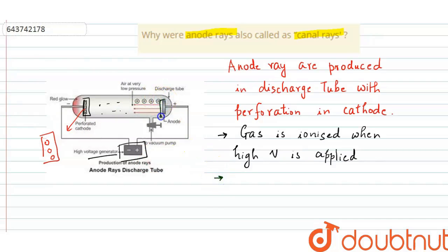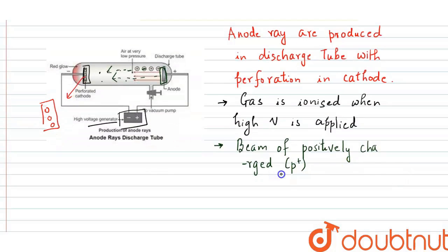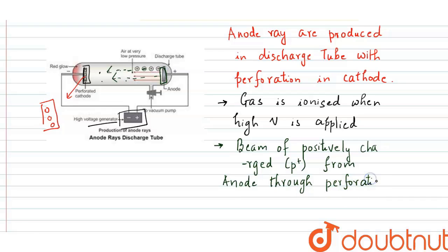The beam of positively charged particles — basically the protons — traveling from the anode to the cathode, through the perforations or holes in the cathode, is called anode rays.